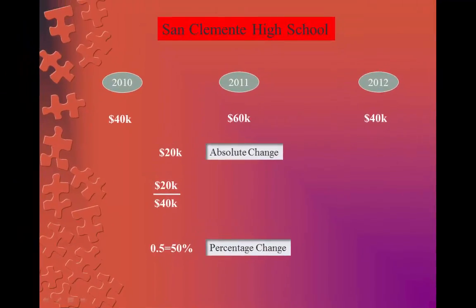The following example deals with the budget of a local football team. San Clemente High School's budget increased between 2010 and 2011 from $40,000 to $60,000. Then by 2012 it fell back to its original level.